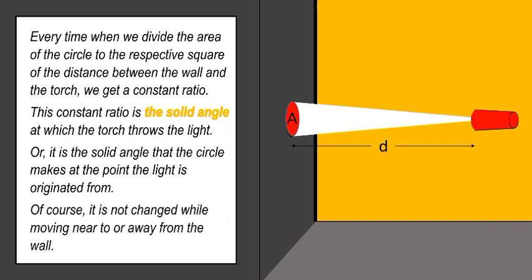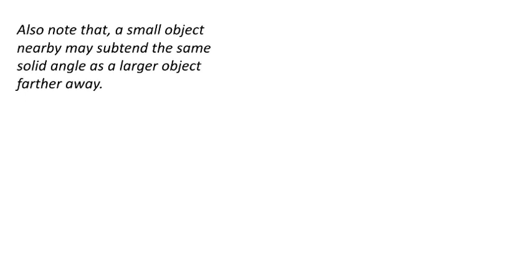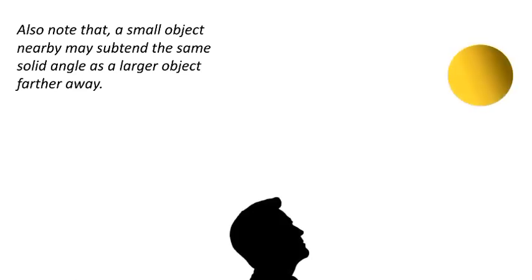Of course, it is not changed while moving near to or away from the wall. Also note that a small object nearby may subtend the same solid angle as a larger object further away. For example, the solid angle subtended by this object on the eye of observer is this much. And the solid angle subtended by this object is the same one.